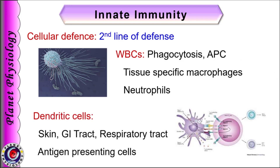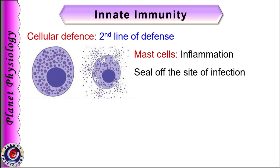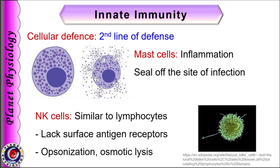Various barriers like skin, gastrointestinal tract, and respiratory tract are also loaded with special cells called dendritic cells, and these cells also act as antigen-presenting cells. The mast cells and basophils that migrate to the site of infection initiate mainly the inflammatory response. This response helps to seal off the site of infection and prevents spread of pathogens. Another kind of cell that participates in innate immunity is the natural killer cell. These cells are similar to lymphocytes but they lack surface receptors for antigens. They kill the pathogens by osmotic lysis and also by stimulating the phagocytosis process.